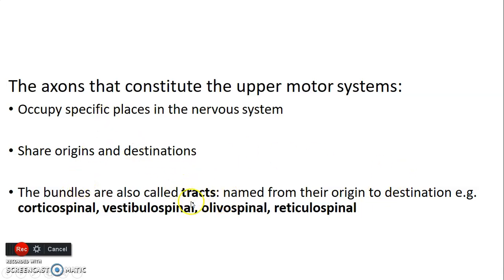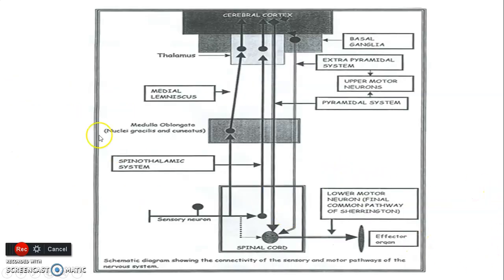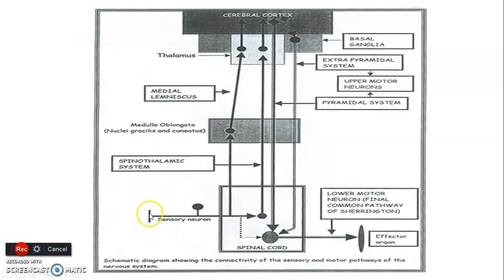These are the pathways that you will learn in the video that discusses the pathways. Your upper motor neuron goes from cerebral cortex to spinal cord. Lower motor neuron goes from spinal cord to your effector organ. For the sensory pathway: first order neuron goes from receptor to spinal cord, second order neuron from spinal cord to thalamus, and third order neuron from thalamus to cortex.